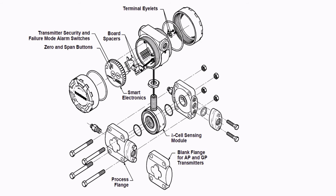Next we have the sensor module. You can see very clearly that at the bottom it has a diaphragm and it has both HP and LP connections — you can see both process flanges are available. In between we have the sensor module which has a diaphragm. The pressure exerted into the process flange pushes the diaphragm, which has a silicon fill fluid, and that pushes the sensing diaphragm. That displacement signal is sent to the smart electronics, which senses the displacement and converts it into a 4-20mA electrical signal.